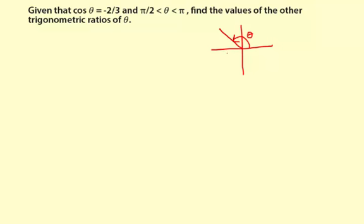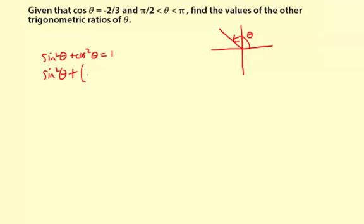This lesson is about using trigonometric identities. I'm going to use sine squared theta plus cosine squared theta equals one, because I'm given the cosine of theta and I can easily use this to find the sine of theta. Substituting: sine squared theta plus negative two-thirds squared equals one.